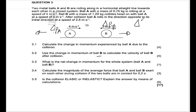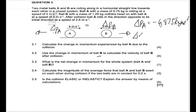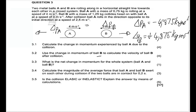So the magnitude of the change in momentum is equal for both balls, just with different signs. We already calculated the change in momentum for ball A as negative 4.875 kg·m/s, which means the change in momentum for ball B is positive 4.875 kg·m/s. The magnitudes are equal but the directions are opposite.